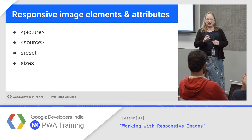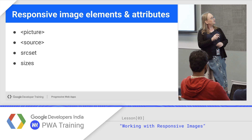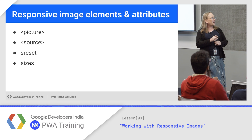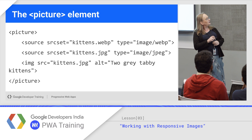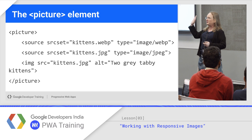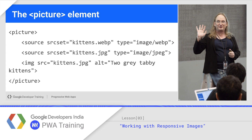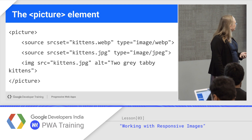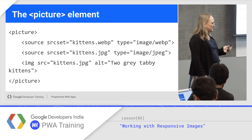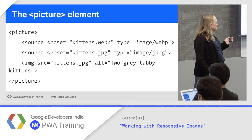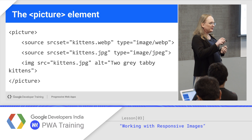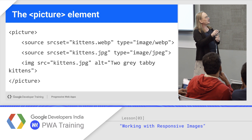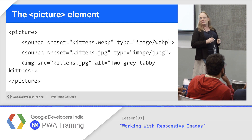Responsive images introduce a new element — picture — an element from HTML5, source, which you might have seen before, and two new attributes: srcset and sizes. The picture element works similarly to audio and video in HTML5: you put the wrapper element in picture, list one or more sources, and the browser goes down and picks the first one that it can handle. You list them in most preferred to least preferred order.